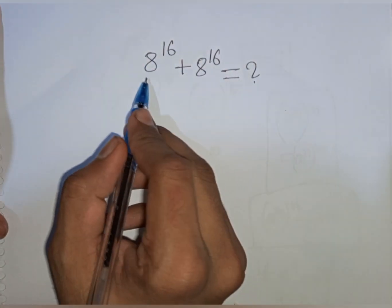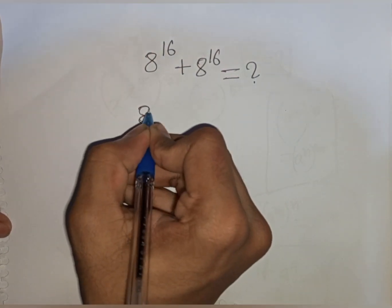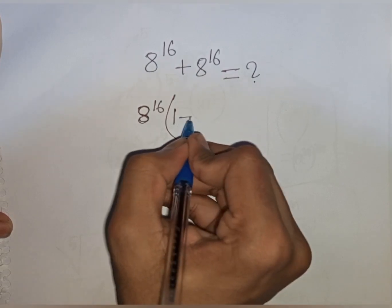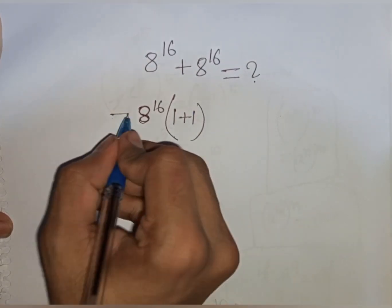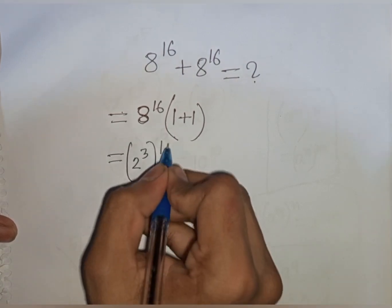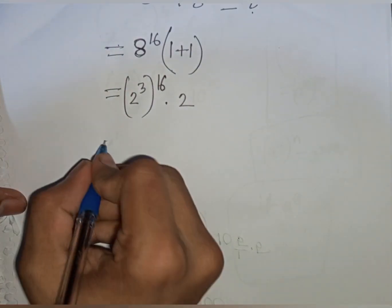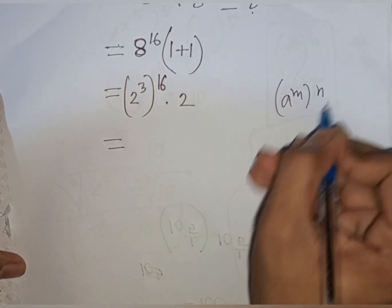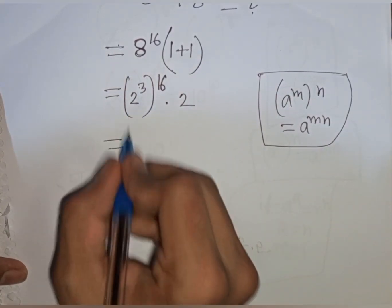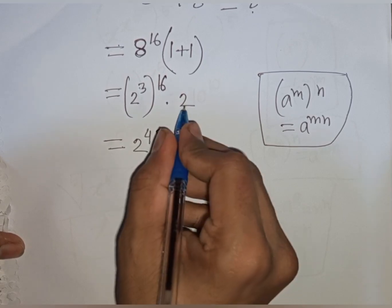Now I will simplify: 8 power 16 plus 8 power 16 is equal to what? We see 8 power 16 is common, so we factor it out. 8 power 16 is out of the bracket, giving 8 power 16 times (1 plus 1), which is 2. Now 8 can be written as 2 power 3, so we have 2 power 3 bracket power of 16, times 2. That means 2 power of 3 times 16, which is 2 power 48, times 2.